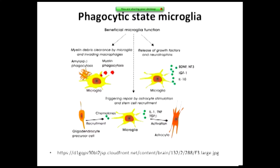Here's a cartoon of what microglia look like in their phagocytic state — cleaning up things like amyloid junk, releasing growth factors including BDNF and NT3, which are associated with learning and memory, as well as anti-inflammatory cytokines, and triggering repair. Their day job really is just to keep the brain humming along, keeping it healthy, allowing learning and memory. When we learn something, we make new connections between neurons and lose old ones — the microglia come along and clean those right up.